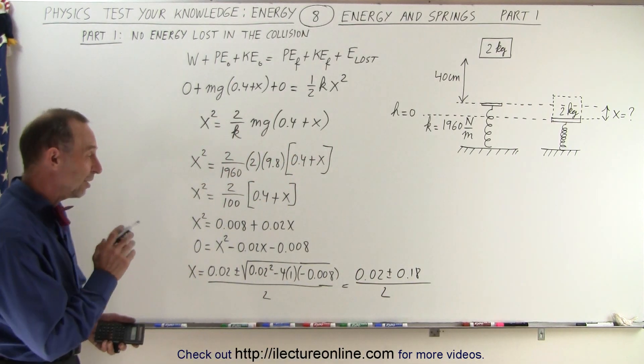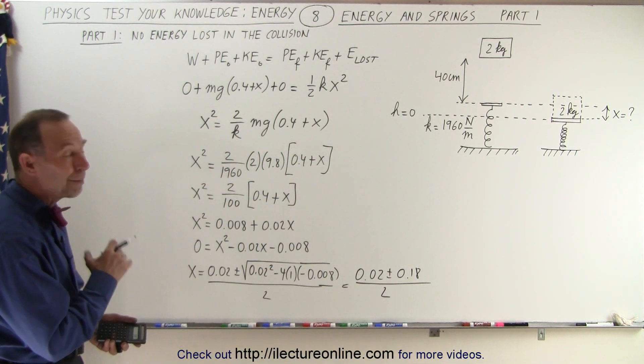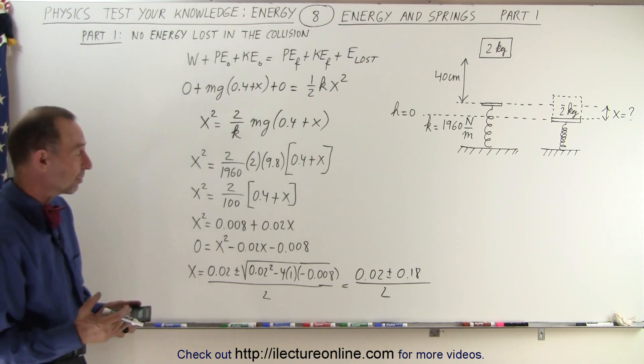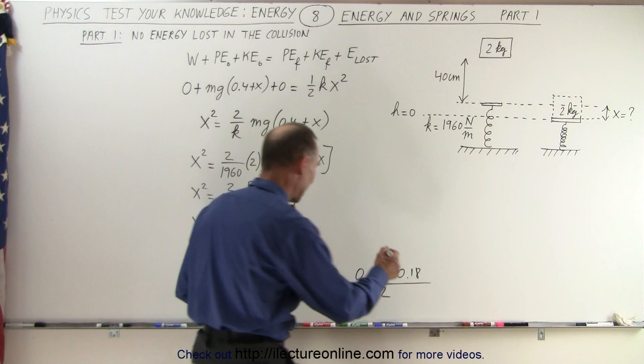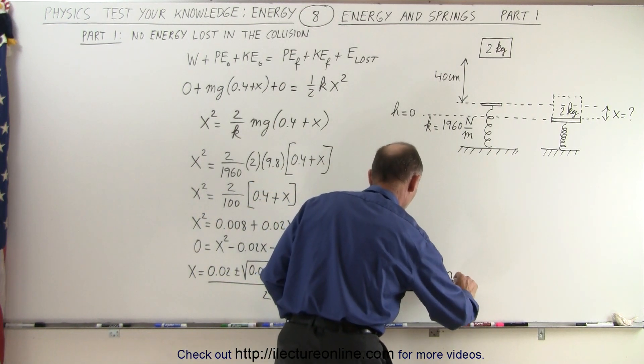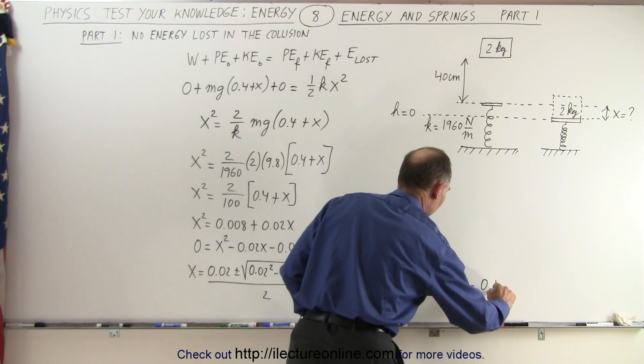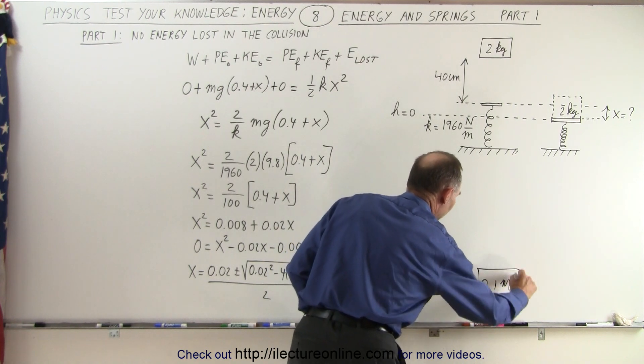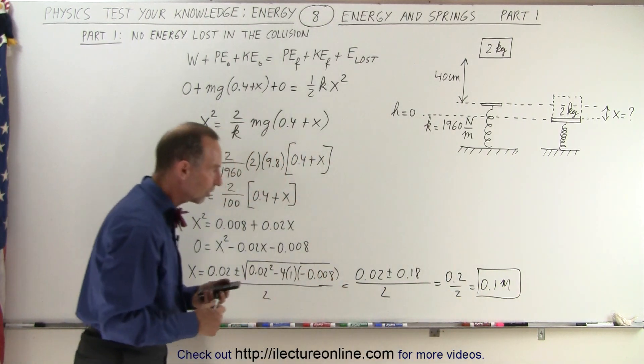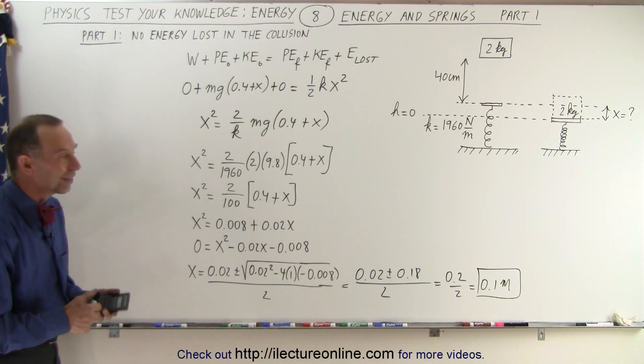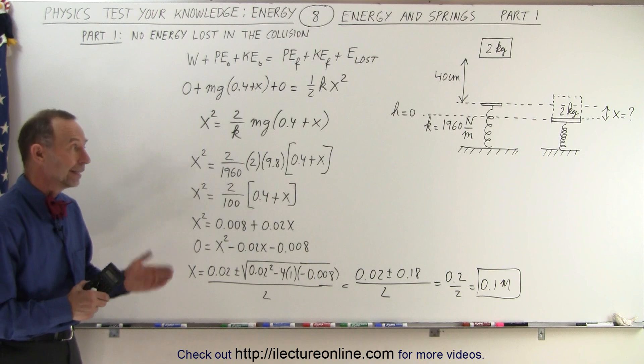Now notice, it doesn't appear possible for that to be a minus, because then we get a negative x. That's not possible. We need a positive x. So when we add these together, this is equal to 0.2 divided by 2, which is equal to 0.1. Of course, that's in meters. And that would then be the answer. The compression of the spring is one-tenth of one meter or 10 centimeters. And that is how that's done.